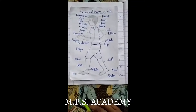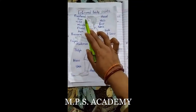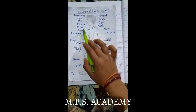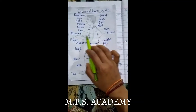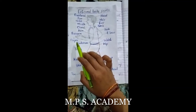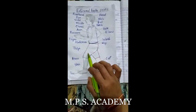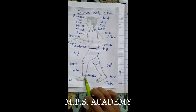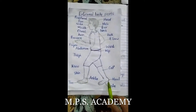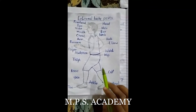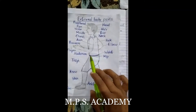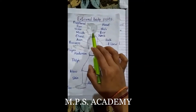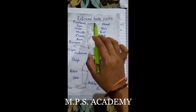The external body parts labeled here include: forehead, eye, nose, mouth, chest, arm, forearm, finger, abdomen, thigh, knee, shin, toe, ankle, sole, heel, calf, hip, waist, elbow, back, neck, ear, hair, and head.